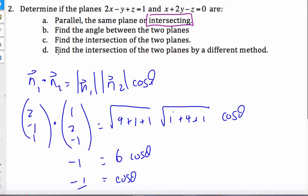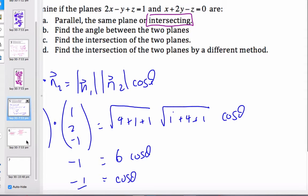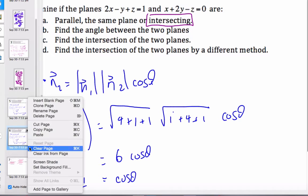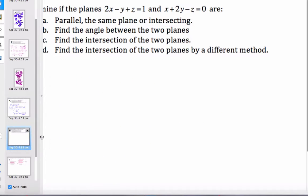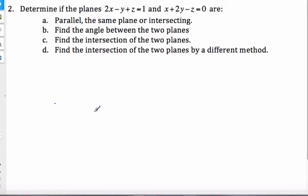Now we want to find the intersection of the two planes, and then part D, do it by a different method. So we're going to do the same question twice. Let's copy what we have here. I'm going to clone this page and clear the ink.